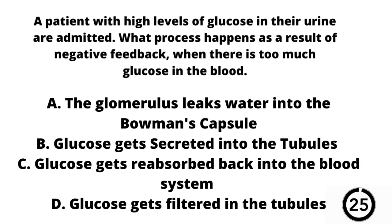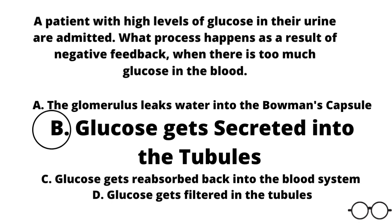And finally, our last question. Sorry for the grammatical error here. A patient with high levels of glucose in their urine is admitted. What process happens as a result of negative feedback when there is too much glucose in the blood? A, the glomerulus leaks water into the Bowman's capsule. B, glucose gets secreted into the tubules. C, glucose gets reabsorbed back into the blood system. Or D, glucose gets filtered in the tubules. Our answer here is B — glucose gets secreted back into the tubules so that it can be excreted via the urine because the body doesn't need all that much glucose. Thank you for being here. I hope you guys learned something new. Until next time.